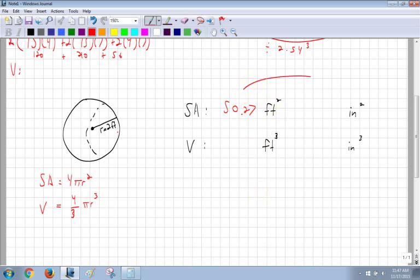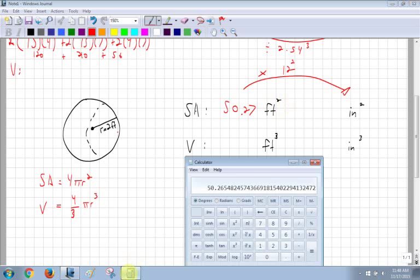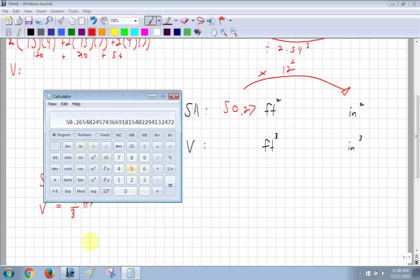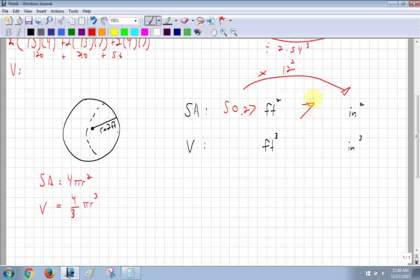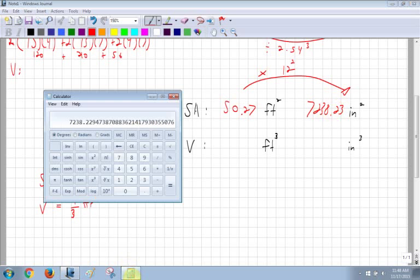Now again, I have to convert this to inches squared. Inches, there's going to be more of them, so I know I'm multiplying, and the conversion from feet and inches is 12. Feet and inches is 12. And am I 12 or 12 squared? 12 squared because it has to match the exponent on the unit. So I have 50.27 times 12 squared, which is 144. So I get 7238.23. 7238.23 if I'm rounding to the nearest hundredth. And that would be in inches squared.